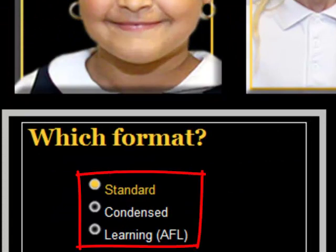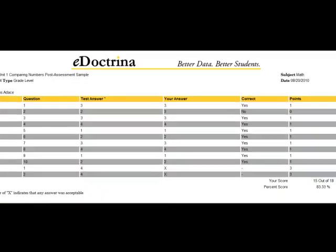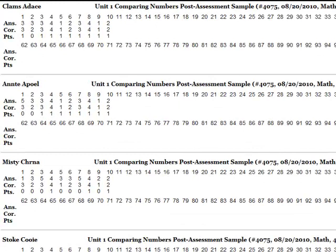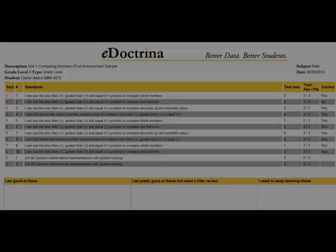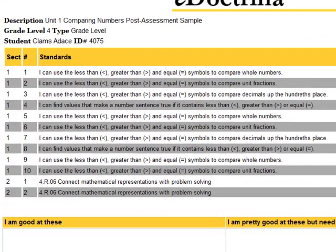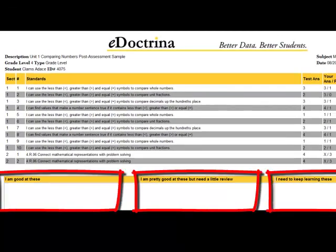Here we're prompted to select one of three reports. The standard report prints each student's results on a single page. The condensed report is for the eco-conscious and provides the same information, but shows multiple students' data on one page. Finally, the AFL button provides data on the specific standard each assessment question relates to, and also provides spaces for students to self-identify which they understood and which need to be reviewed.